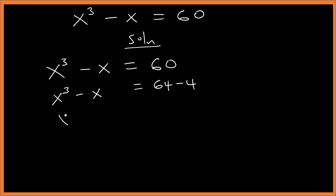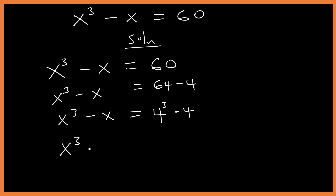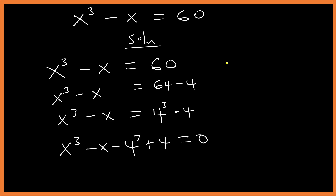From here we can write this as x cubed minus x equals 64, which is the same as 4 to the power 3, minus 4. Rearranging, we bring everything to one side: x cubed minus 4 cubed minus x plus 4 equals 0.